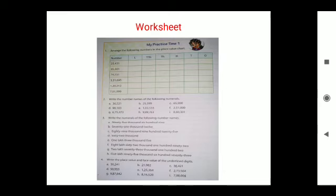This is your worksheet. In question one, you have to arrange the numbers in a place value chart: ones, tens, hundreds, thousands, ten thousands, lakhs. Question two: write the number names of the following numbers, like thirty-six thousand five hundred twenty-one.